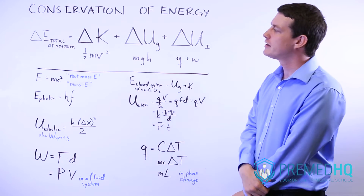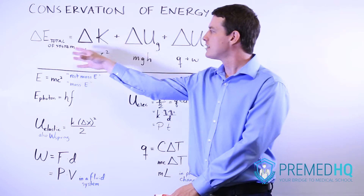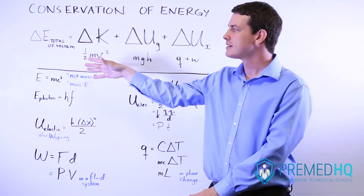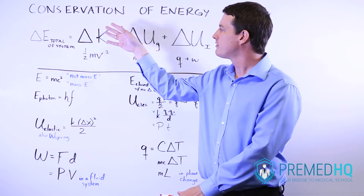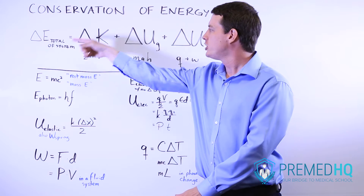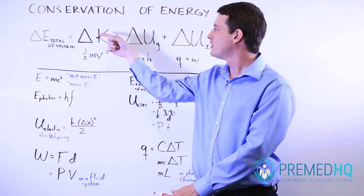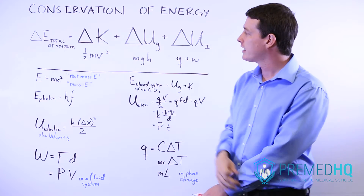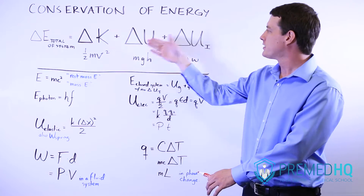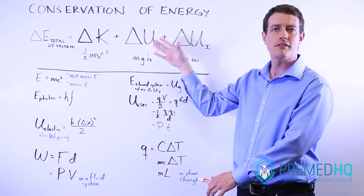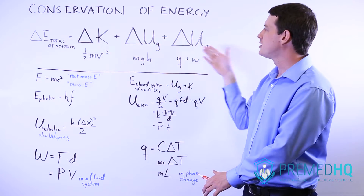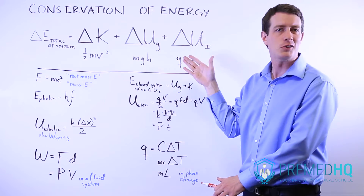So the total energy of a closed system, especially when you're dealing with mechanics, you have to look at the change in total energy being equal to the change in kinetic energy plus the change in gravitational energy plus the change in internal energy.